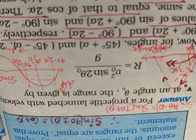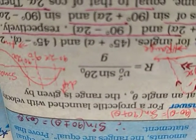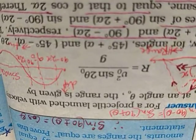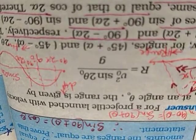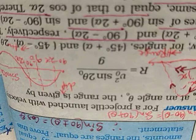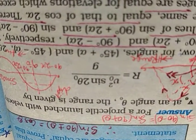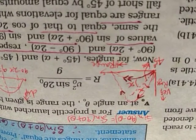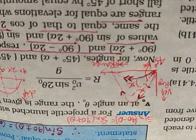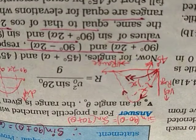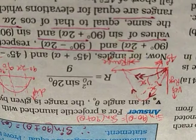Now here you see the relation for horizontal range R is equal to V0 squared sine 2 theta by g. Here V0 is the velocity at the time of projection, and theta is the angle made by the projectile at the time of projection with x axis.